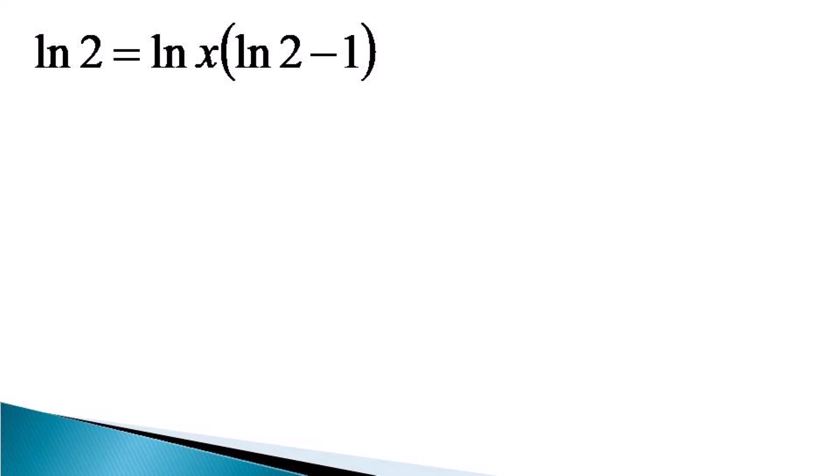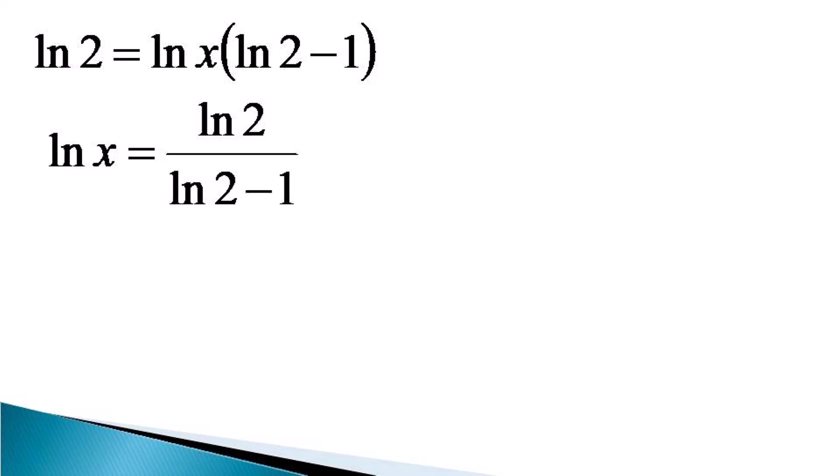So we get lnx is equal to ln2 divided by (ln2 minus 1), and from the definition of log, x can be found out as equal to e raised to the power ln2 divided by (ln2 minus 1). This can be the answer, but this expression looks a little clumsy.